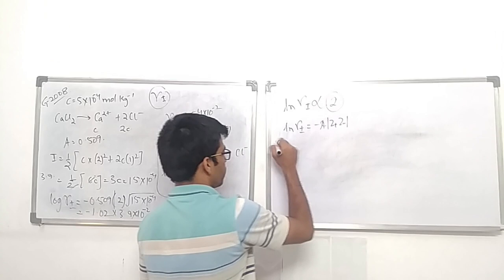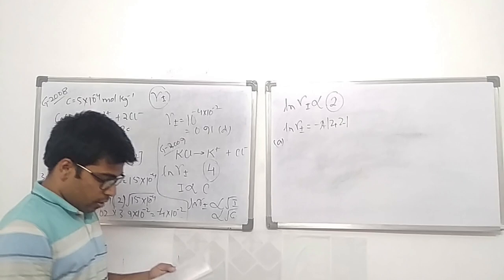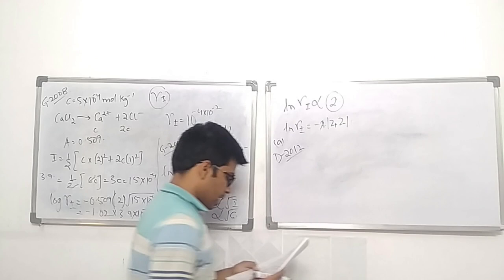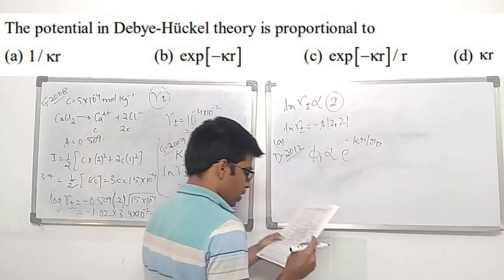The next question is from NET December 2012. It states that the potential in the Debye-Hückel theory is proportional to e^(−r/r_D), which is option C.